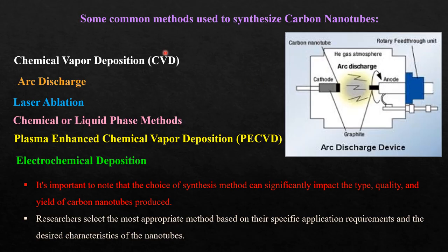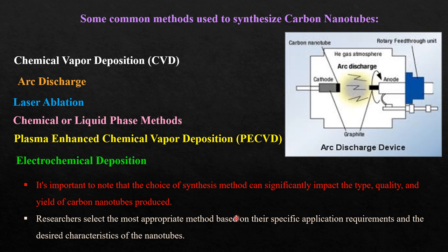Some of the common methods by which we can synthesize carbon nanotubes are chemical vapor deposition, arc discharge, laser ablation, chemical or liquid phase methods, and plasma enhanced chemical vapor deposition method and electrochemical deposition.